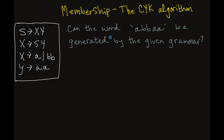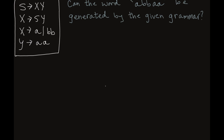Can the word ABBAA be generated by the given grammar? We're going to use the CYK algorithm to figure this out. The string is ABBAA.